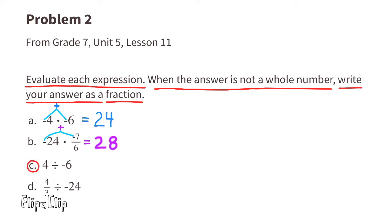Part c: This is a positive divided by a negative, so we know the answer is going to be a negative. 4 divided by 6, that's the same as 4 over 6. We can do some simplifying: 2 goes into 4 twice, and 2 goes into 6 three times. 4 divided by negative 6 equals negative 2/3.